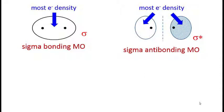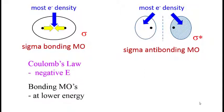Because the electron density is between the nuclei in the bonding orbital, the nuclei are attracted toward the center. Coulomb's law would tell us that the energy associated with opposite charges attracting is negative. What we'll find is that bonding molecular orbitals are always at lower energy than the atomic orbitals from which they came.